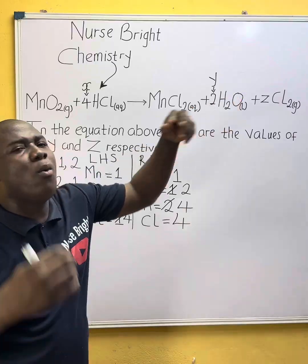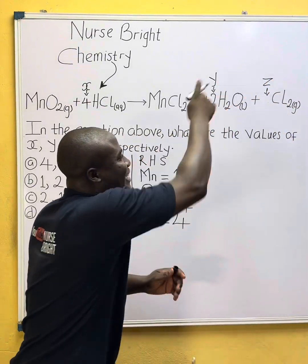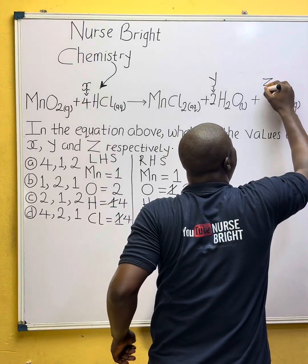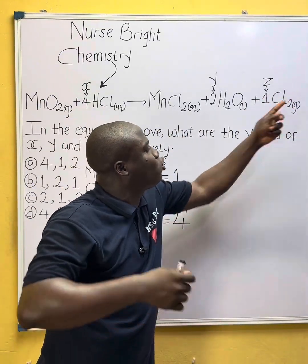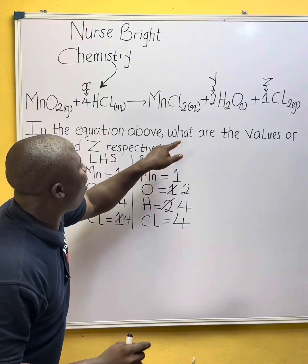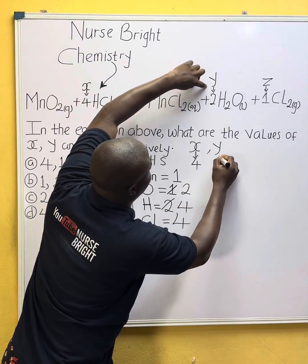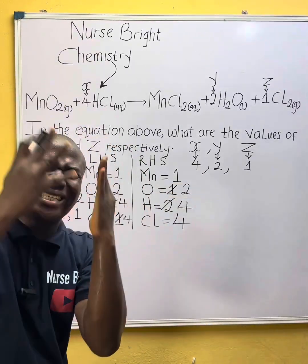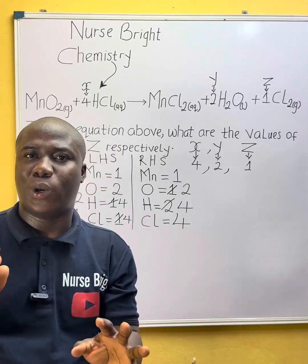We have not yet addressed Z. At the end of everything, before we came to this side, everything is already balanced. So what should Z be? It should be one — because one times Z still gives two oxygen atoms. One times two is two, so it doesn't affect anything. The answer to this question: X is 4, Y is 2, and Z is 1, respectively. Look for the option that reads four, two, one — that's option D. That is how questions on this aspect are tackled without stress.